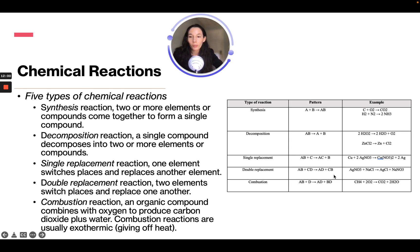We have a double replacement reaction where two elements switch places and replace one another. So AB plus CD equals AD plus CB.